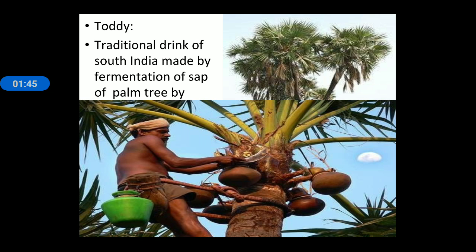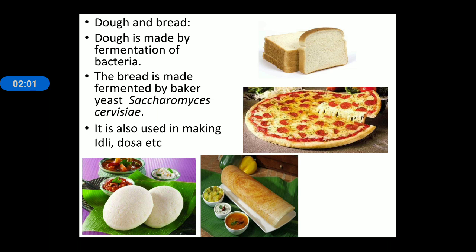Next is toddy, a traditional drink of South India obtained from the sap of palm trees. It is produced by fermentation. Next is bread and dough — dough is made by fermentation of bacteria and bread is made by yeast, commonly known as baker's yeast, with the scientific name Saccharomyces cerevisiae. Microbes are also used in making idli and dosa. In summary, microbes are used in daily life for food products such as curd, bread, toddy, idli, and dosa.